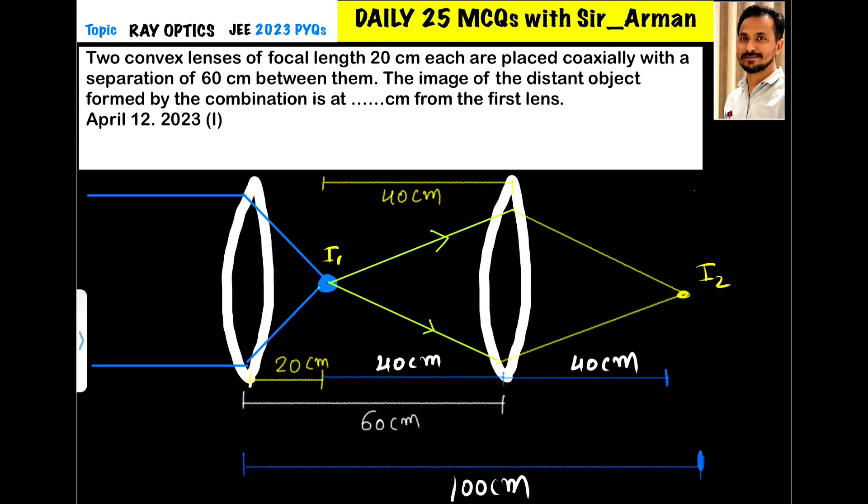Two convex lenses of focal length 20 centimeter each are placed coaxially with a separation of 60 centimeter between them. So we have two lenses, both are convex lens, both have the same focal length 20 centimeter, and they are placed 60 centimeter apart. That is the distance between these two lenses, 60 centimeter.